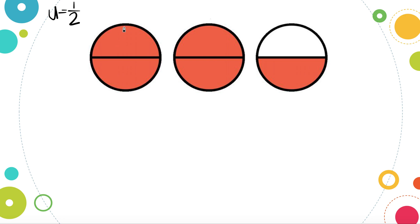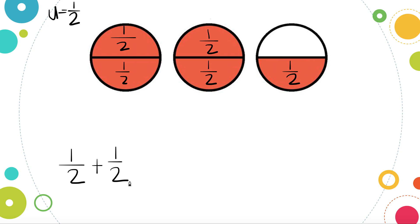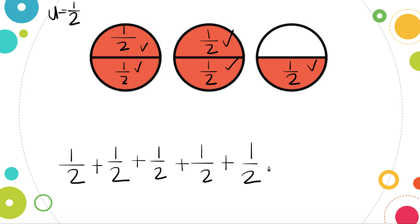Just like last time, we are going to label every shaded piece with our one-half label. In order to find how much is shaded in, we add those unit fractions together: one-half plus one-half plus one-half plus one-half plus one-half plus one-half. We keep the denominator the same and add our numerators to count how many pieces are shaded in: one-half, two-halves, three-halves, four-halves, five-halves. That gives us our improper fraction.